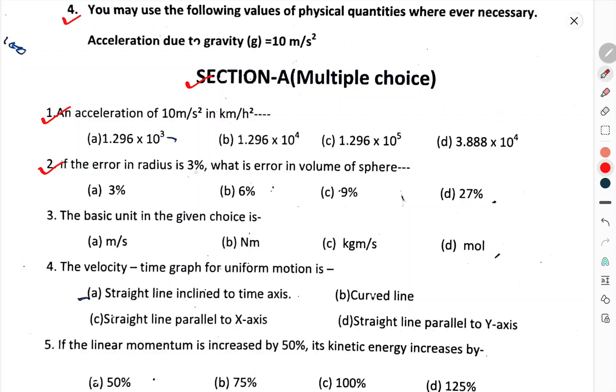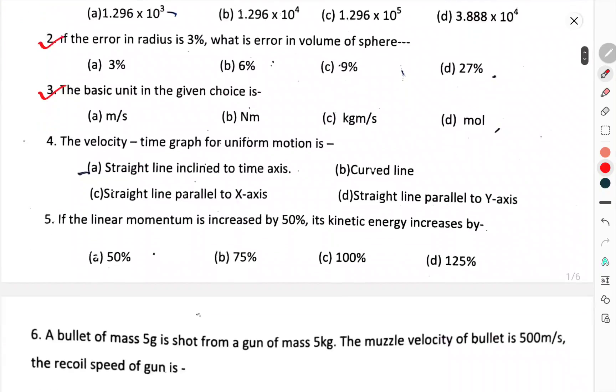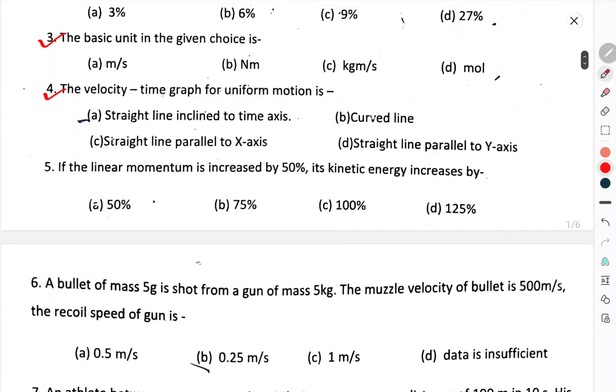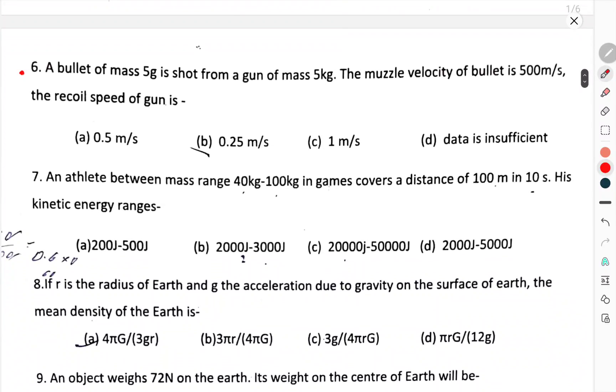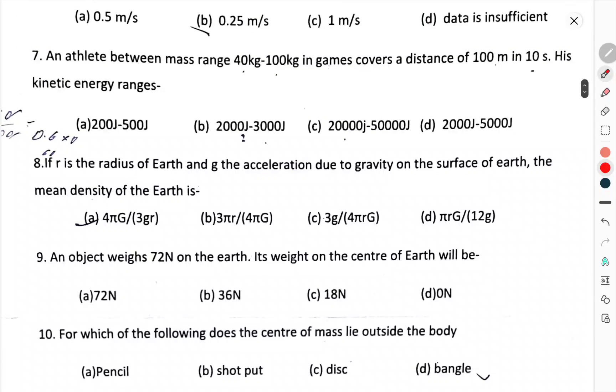If the error in radius is 3%, what is the error in volume of sphere? The basic unit in the given choice is. The velocity-time graph for uniform motion is. If the linear momentum is increased by 50%, its kinetic energy increases by. Question number 6. A bullet of mass 5 gram is shot from a gun of mass 5 kg. The muzzle velocity is 500 m/s. The recoil speed of the gun is.